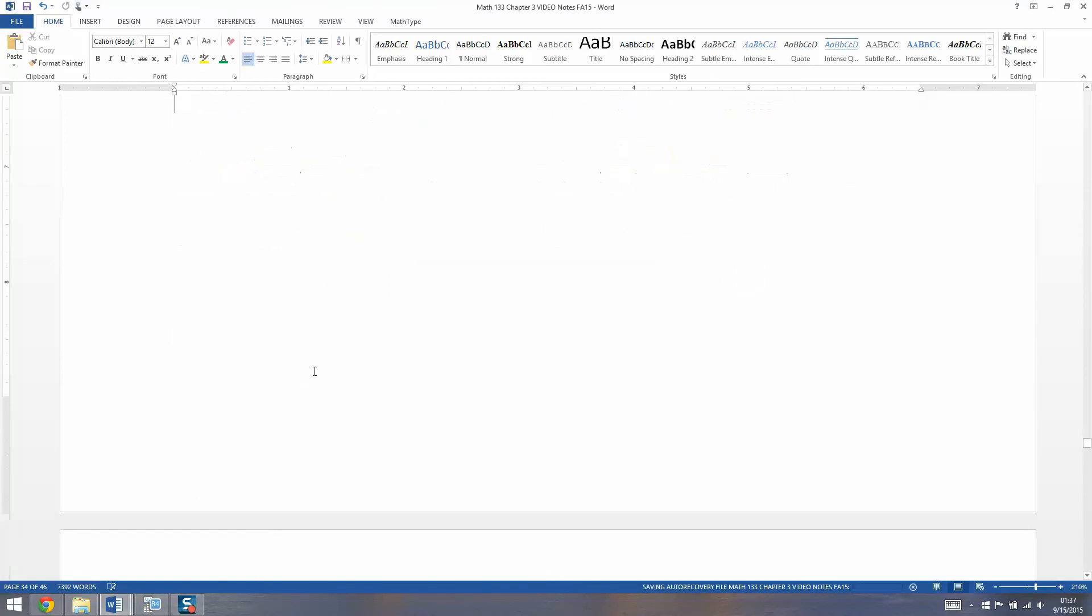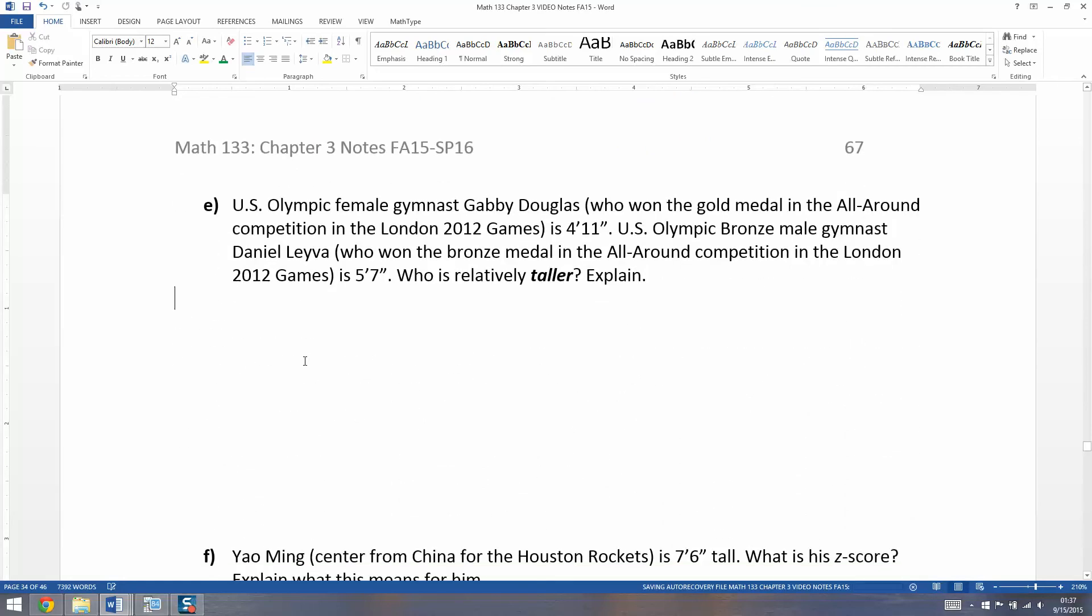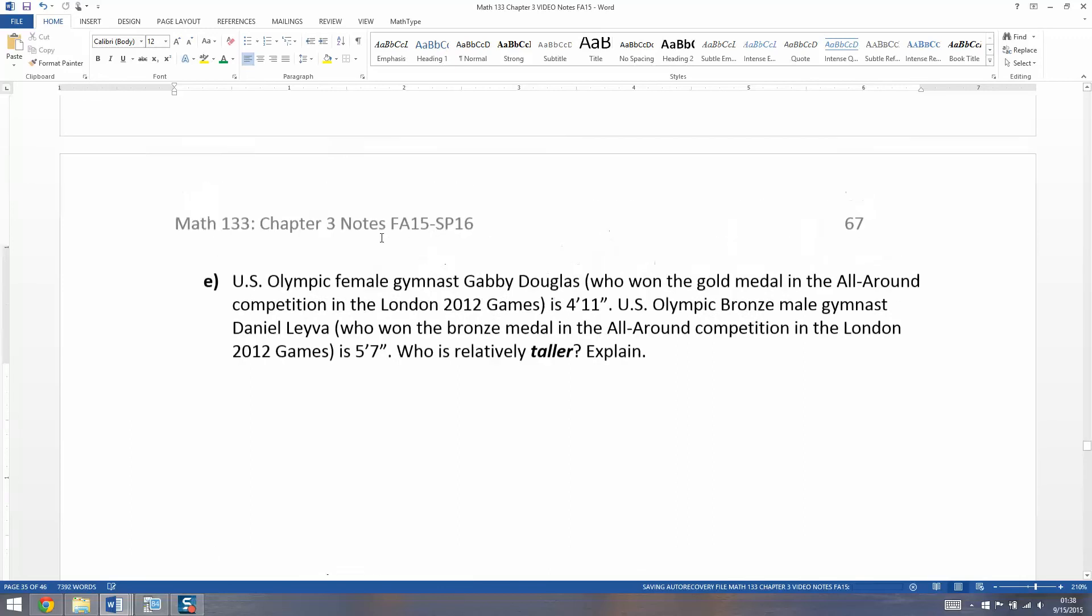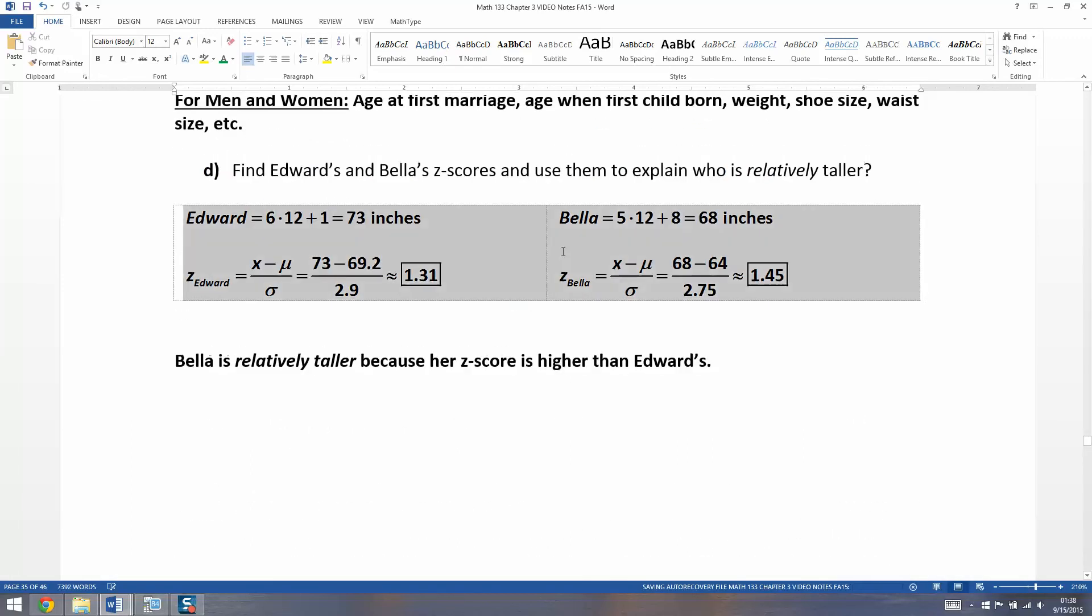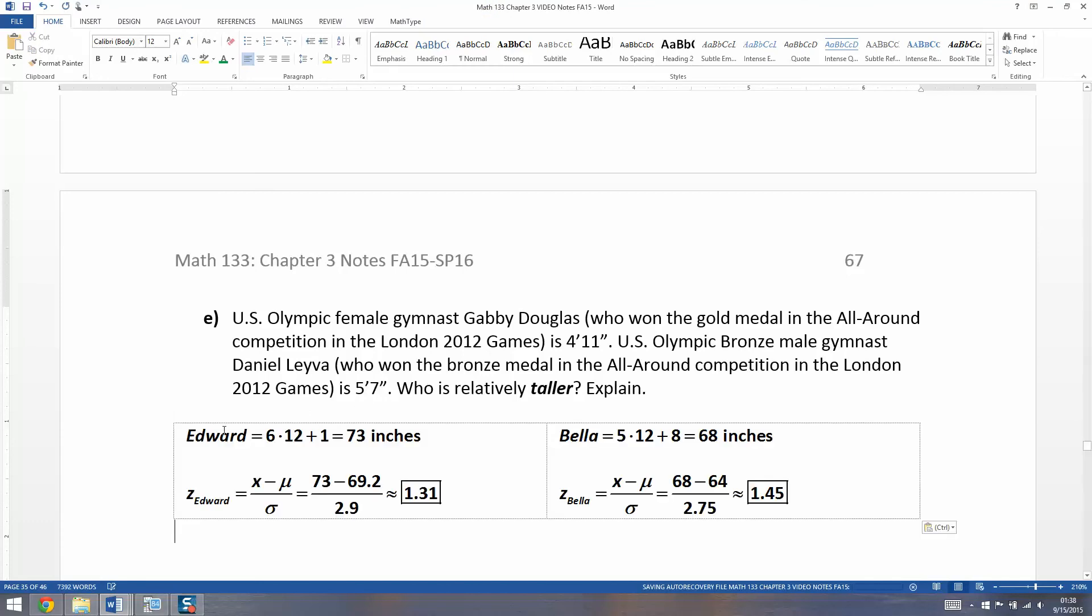Now let's take it a step further with some short people. U.S. Olympic female gymnast Gabby Douglas, who won the gold medal in the all-around competition in the London 2012 Games, is 4 feet 11 inches tall. U.S. Olympic bronze male gymnast Daniel Levya, from the same London Games, won the bronze medal in the all-around competition. He's 5'7", so who is relatively taller? First thing we're going to have to do is find their heights in inches.